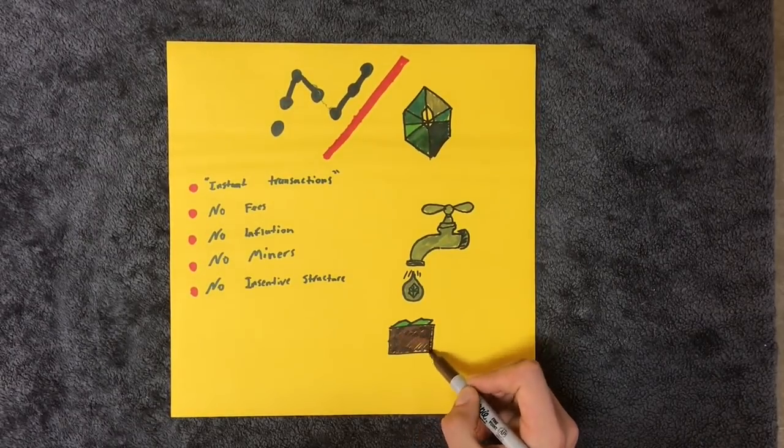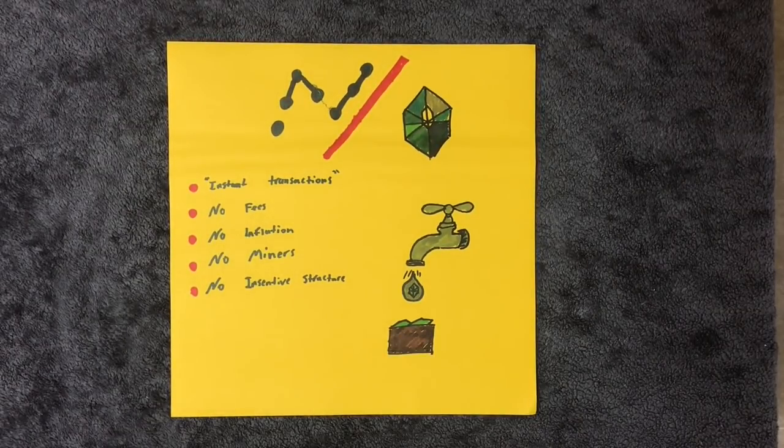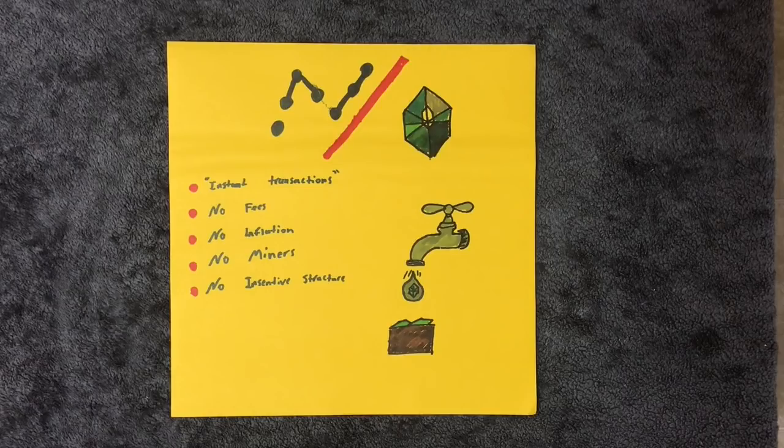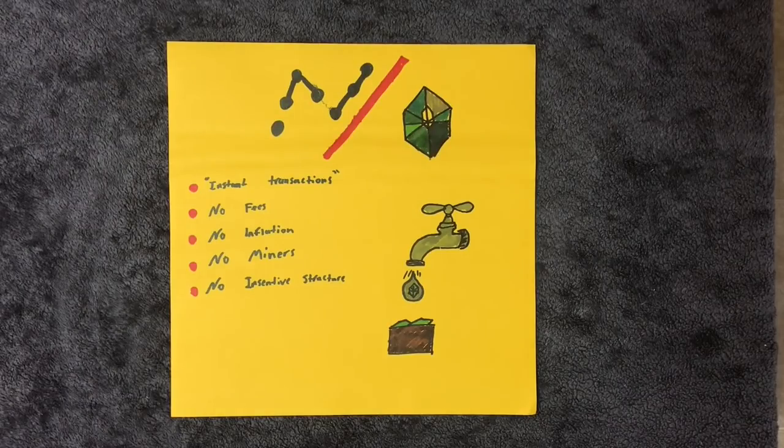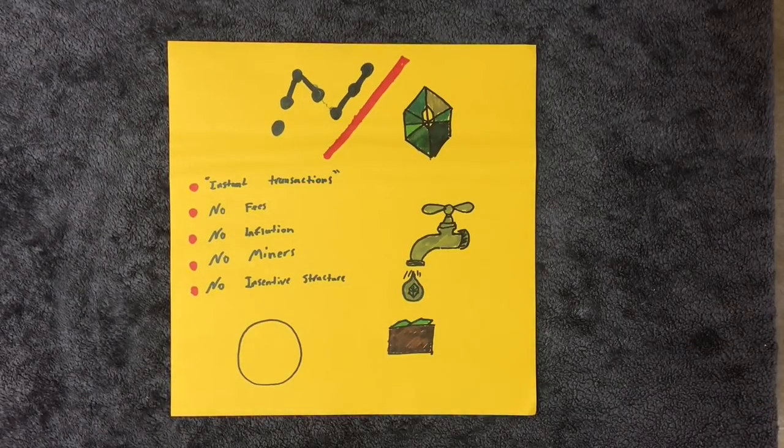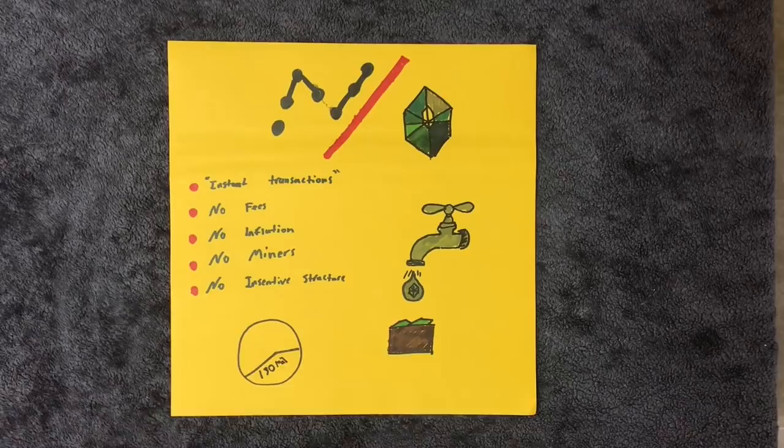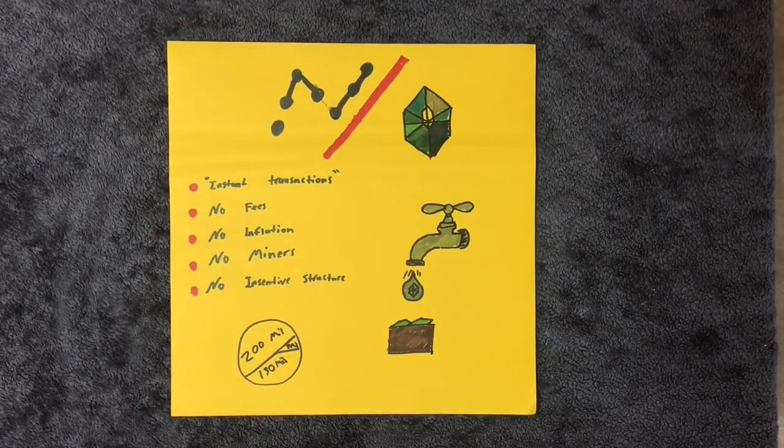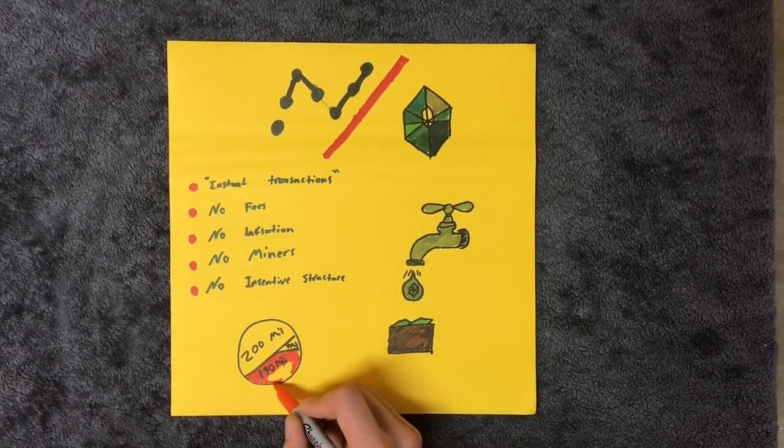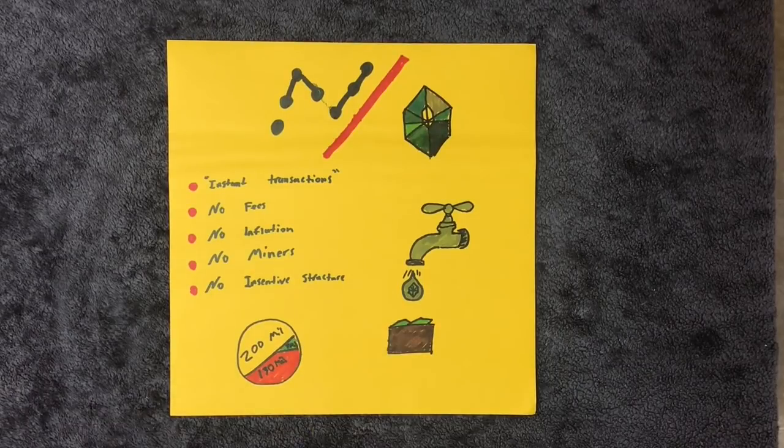Anyone who was aware at the time could have done this and received free Raiblocks. Some faucets gave out hundreds of Raiblocks per CAPTCHA, worth thousands of dollars today. Roughly 130 million Raiblocks were distributed to the community in this manner, and 7 million were kept for the development fund. The remaining 200 million coins were burned and destroyed forever.